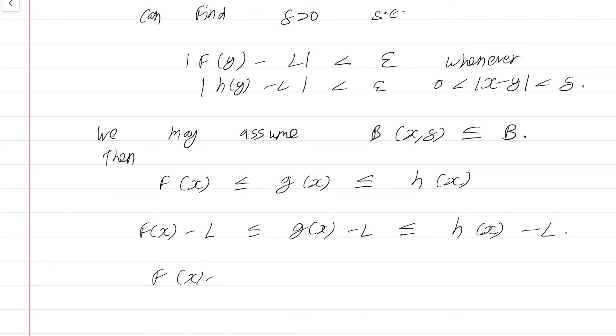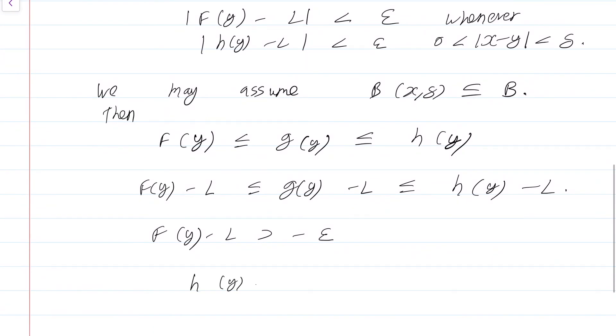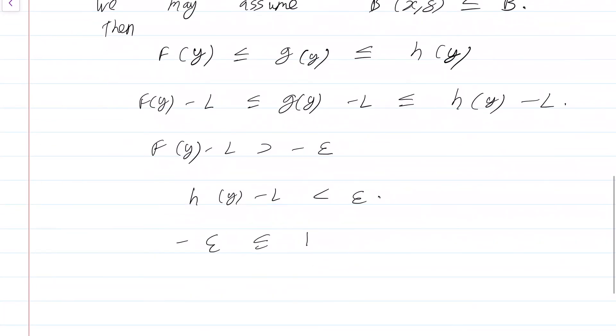But f(y) - L is greater than -epsilon, whereas h(y) - L is less than epsilon. This just follows from the fact that |f(y) - L| < epsilon and |h(y) - L| < epsilon. That immediately gives -epsilon ≤ g(y) - L ≤ epsilon, and we are done.